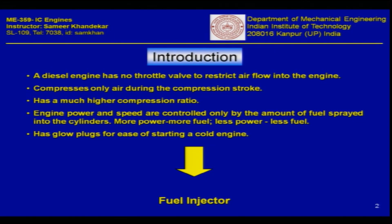A diesel engine has no throttle valve to restrict air flow to the engine. In a petrol engine, there is a carburetor with a throttle valve which restricts the air and controls the amount of fuel coming in, and this mixture of vaporized petrol along with air goes inside the engine. However, in a diesel engine, only air is inducted and compressed during the compression stroke.